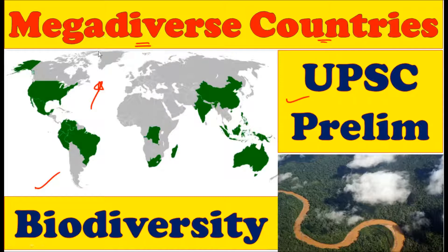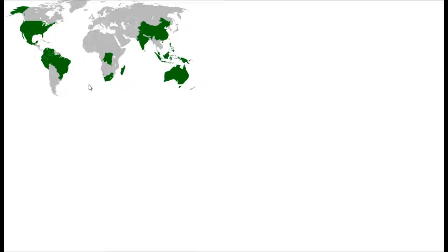In this video lecture, we are going to cover the megadiverse countries. Let us see first of all what are these megadiverse countries. This image shows the world map, and those parts which are shown in green color are the megadiverse countries. All these megadiverse countries acquired the status of megadiverse country upon fulfilling some criteria.